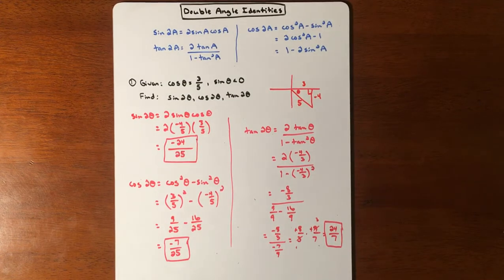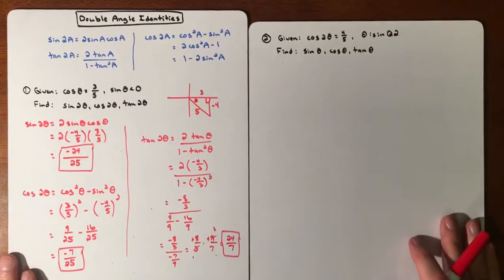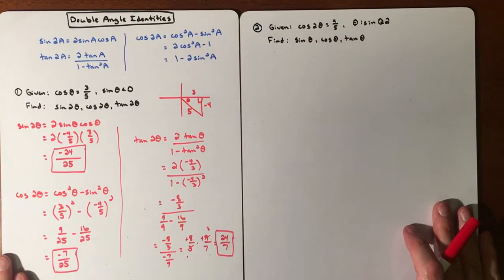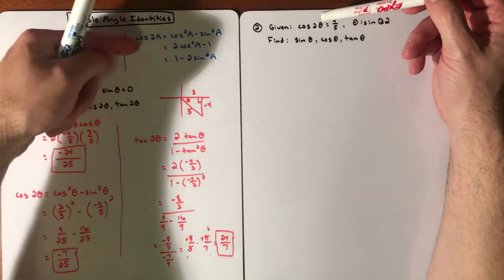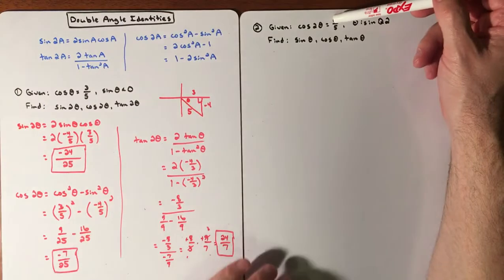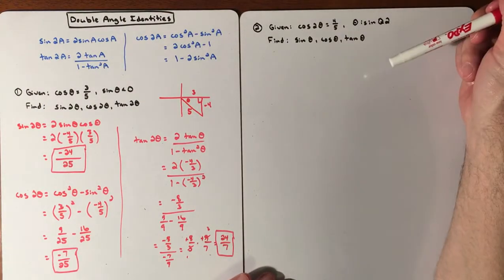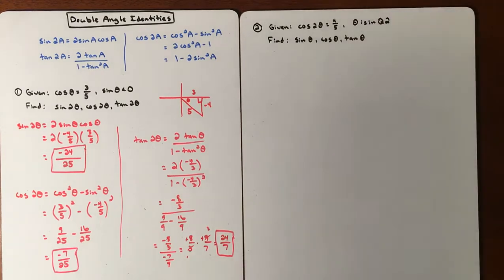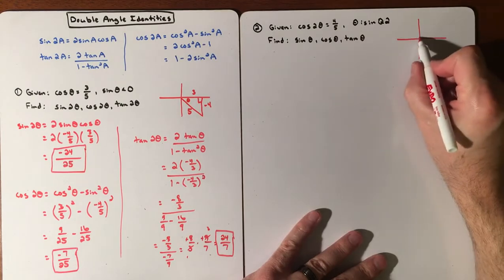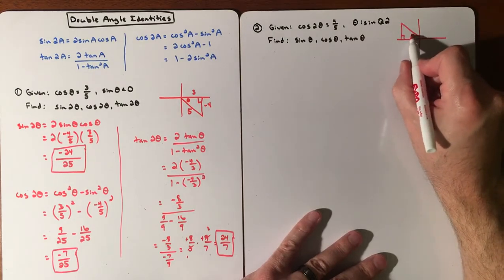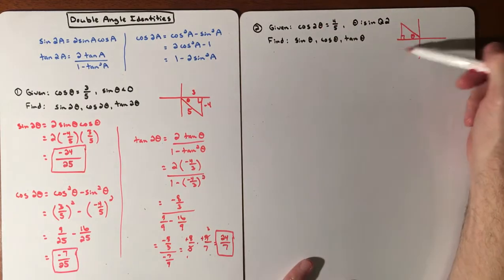All right, so that's our first example. Our second example is going to kind of build off of this, but this time we have the double angle. So we actually have cos(2θ) equal to 4/5, and we need to try to figure out what sine, cosine, and tangent of the original angle are. It does give us a hint that this θ is in quadrant 2.